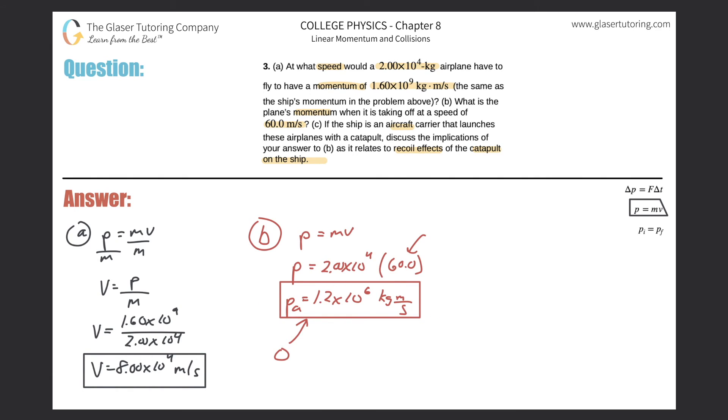So basically, the ship will lose the momentum. The ship loses 1.2 times 10 to the 6 kilogram meter per second of momentum. But it won't make too much of a difference in terms of its overall speed, because the ship is so massive. So the ship should change a little speed, but not by much.